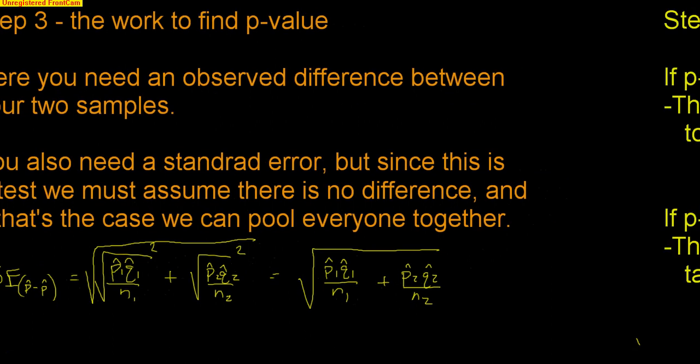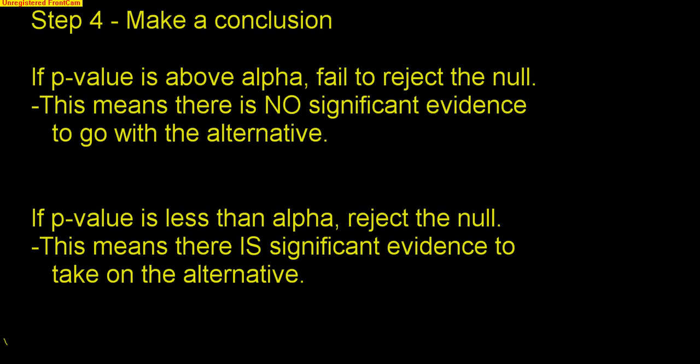Step four is to make our conclusion. If your p-value is above alpha, we fail to reject the null — there's no significant evidence to go with the alternative. We might have witnessed a difference, but it's not big enough to say there truly is one. When your p-value is less than alpha, we reject the null and say there is significant evidence for the alternative — there really is a significant difference between the two values.